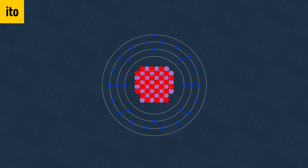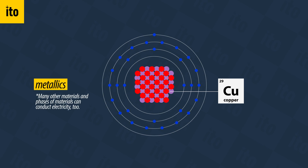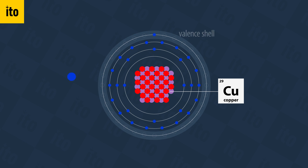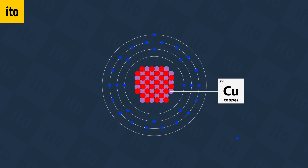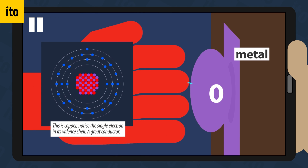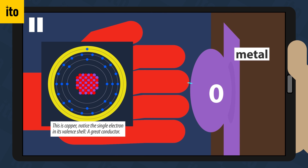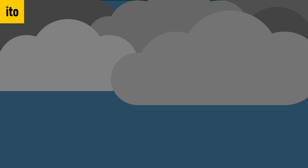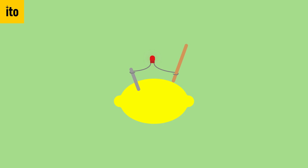Certain materials, such as metallics, have loosely bound electrons on the outer shell of their atoms. This makes them great at conducting electricity, something we explained in our first video in more detail. Aside from metallic conductors, there are also other materials that can conduct electricity.